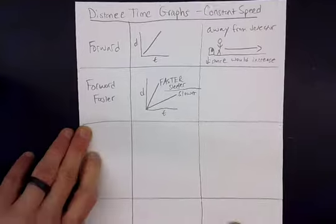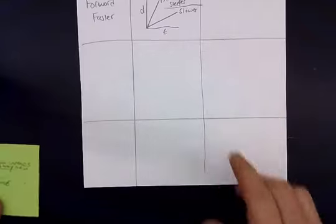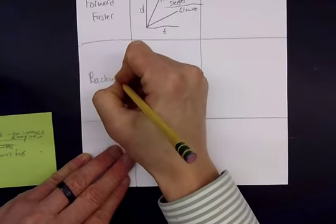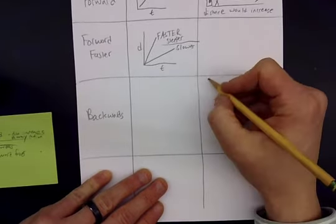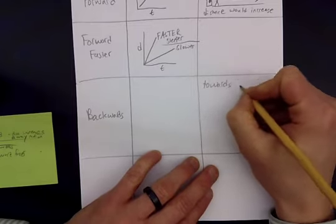Now let's look at backwards as well, moving backwards at a constant speed. These are all constant speed because they're a straight line graph. So if you move backwards as well, what does that look like? Well, that means you're going towards, back towards the motion detector.